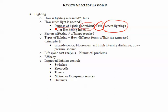Color Rendering Index: different lighting produces different abilities to see true colors. The Color Rendering Index is measured on a scale from 0 to 100, with 100 being perfect colors or absolutely no color shift. That is generally possible in natural light.